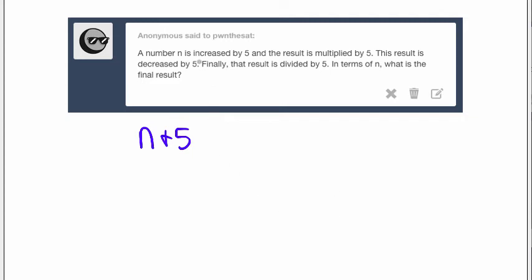So a number n is increased by 5, and that result is multiplied by 5. So we'll still have 5 times (n+5). This result is decreased by 5, outside the parentheses. Finally, that result is divided by 5.